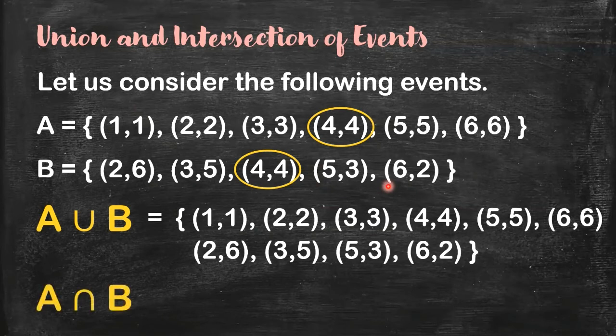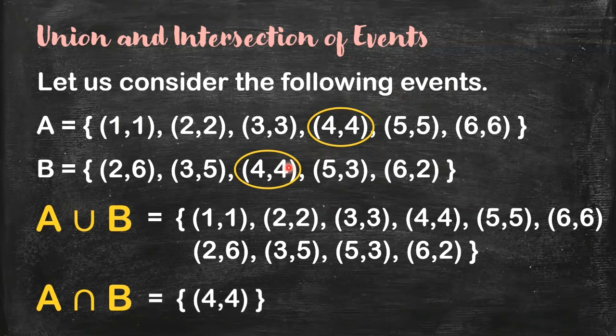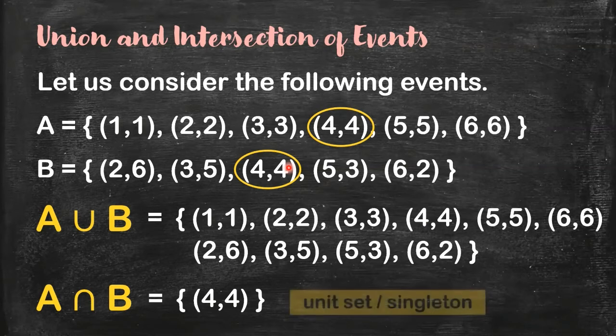Now we get the intersection. What is the intersection? Common elements of the two given sets. And obviously, it's this one: four, four. So the intersection of A and B contains four, four. We have a special name for a set having one element only, just one element. It is called a unit set or a singleton.